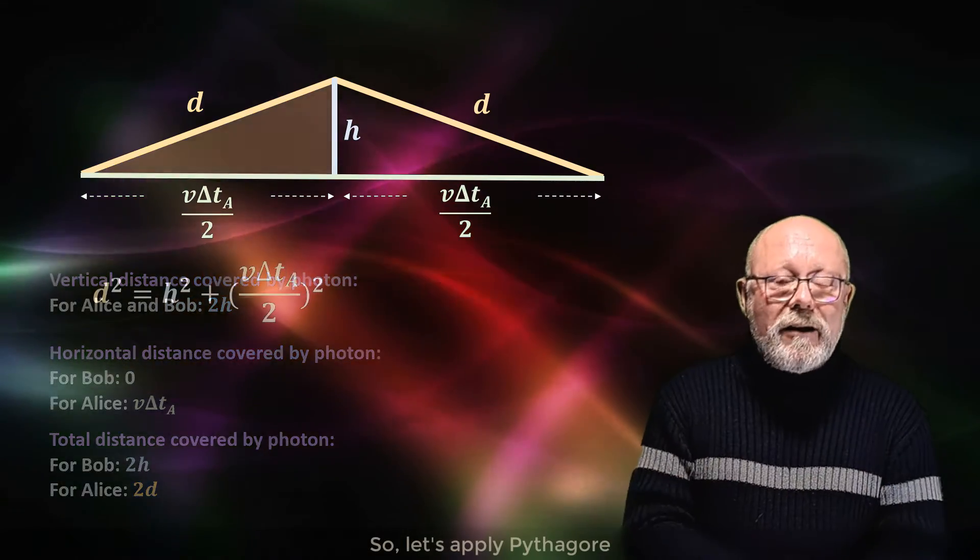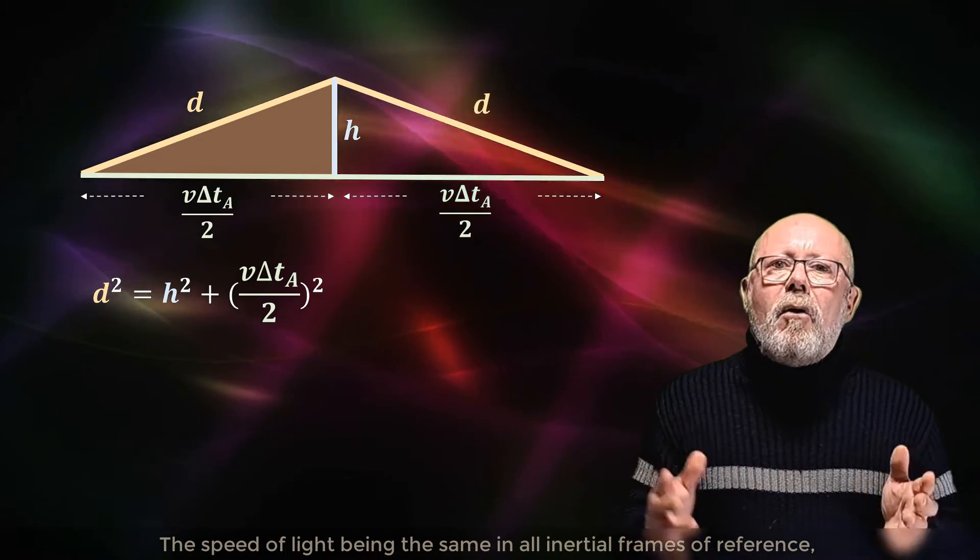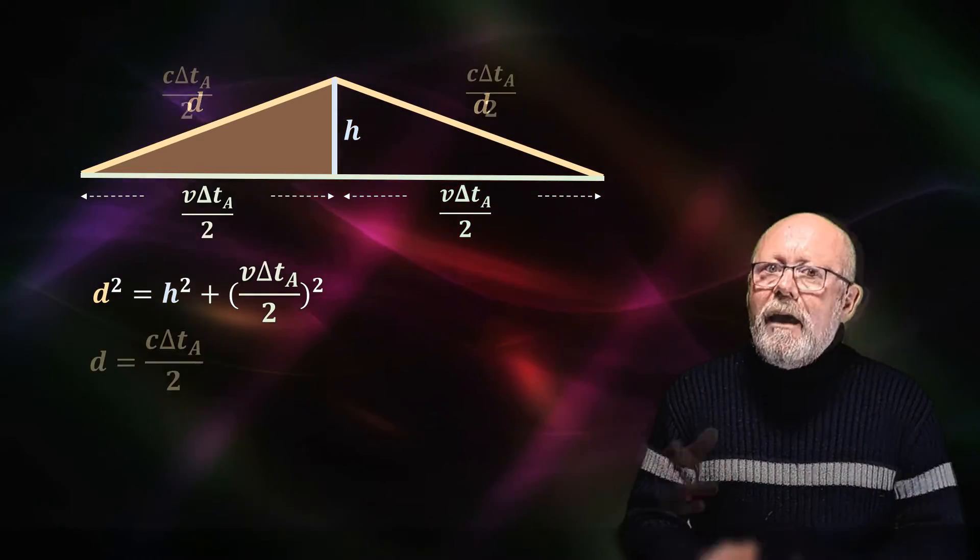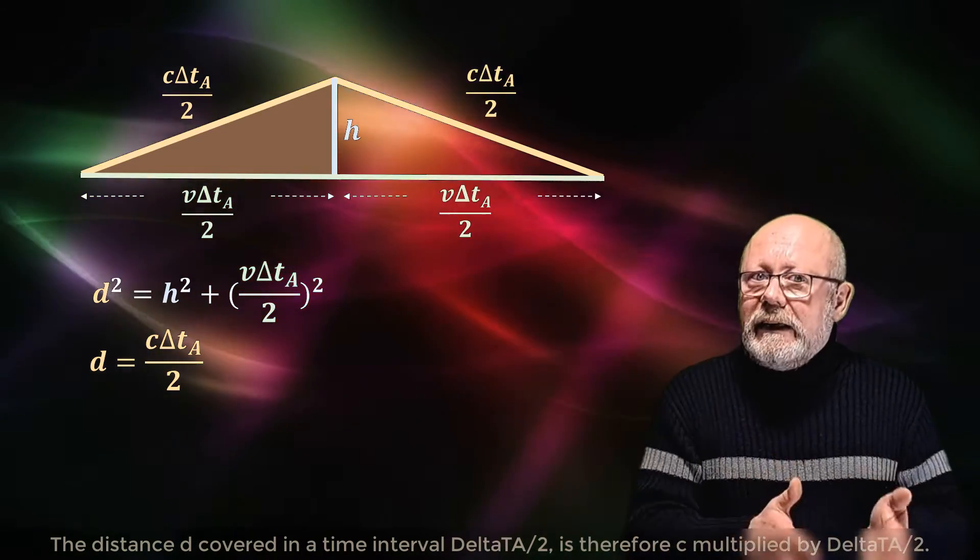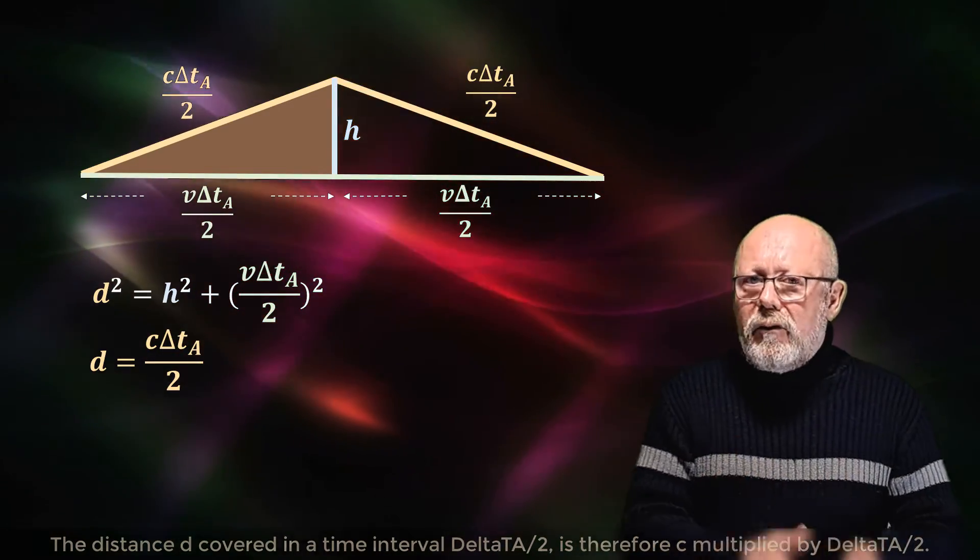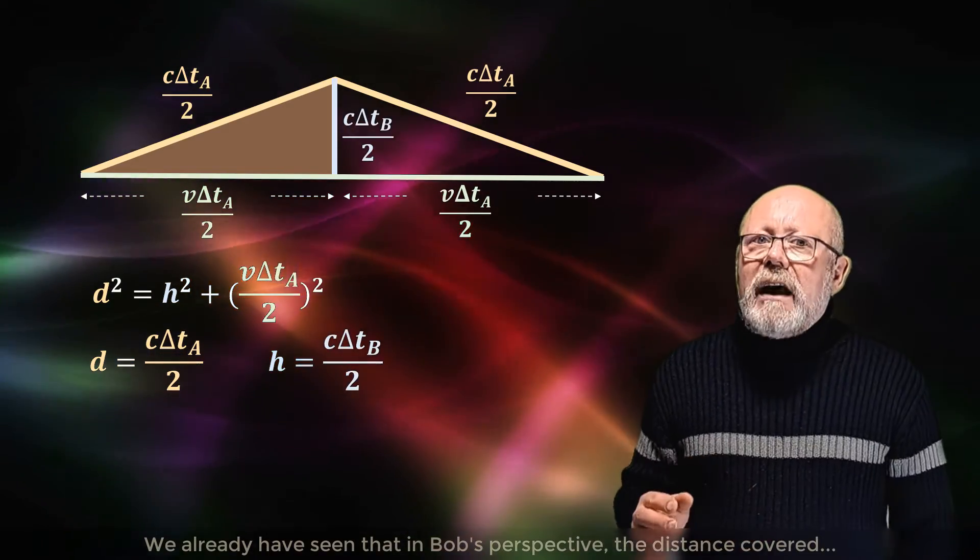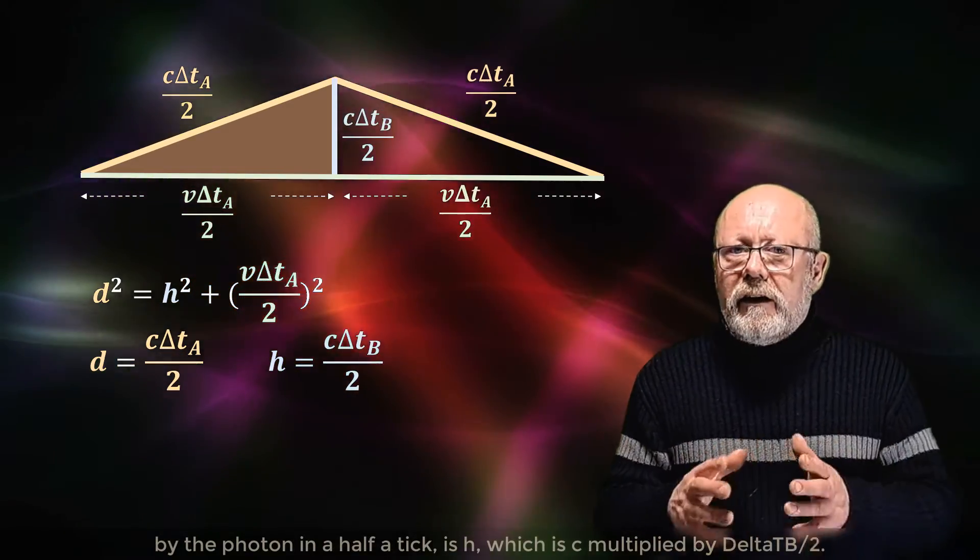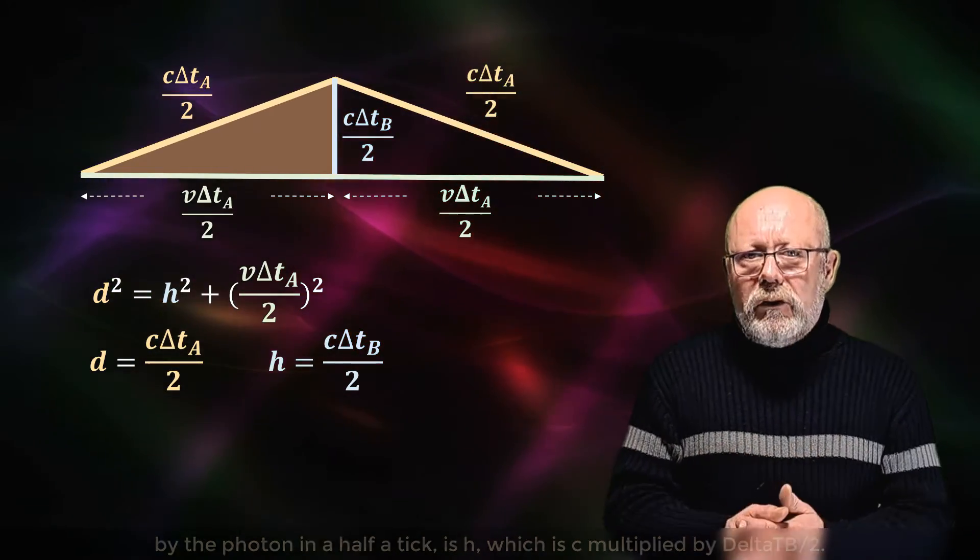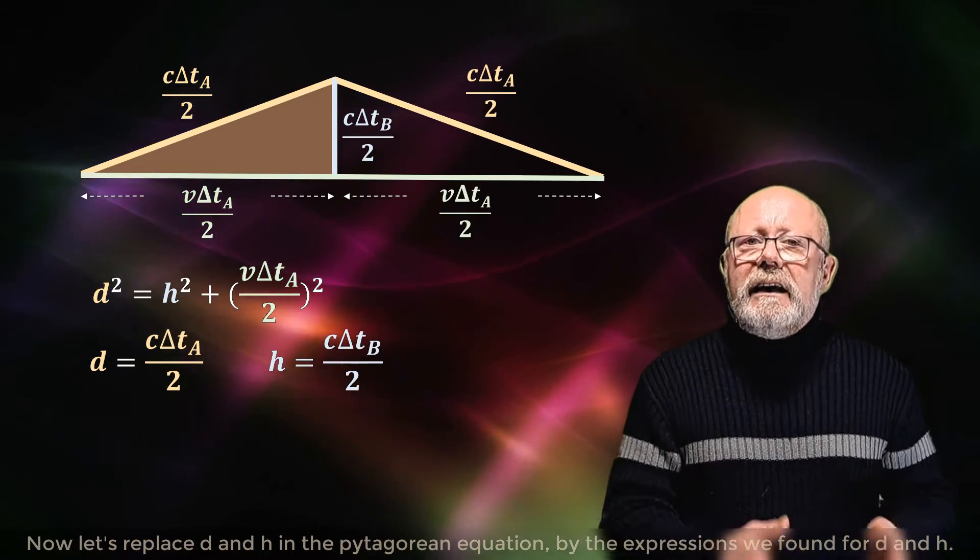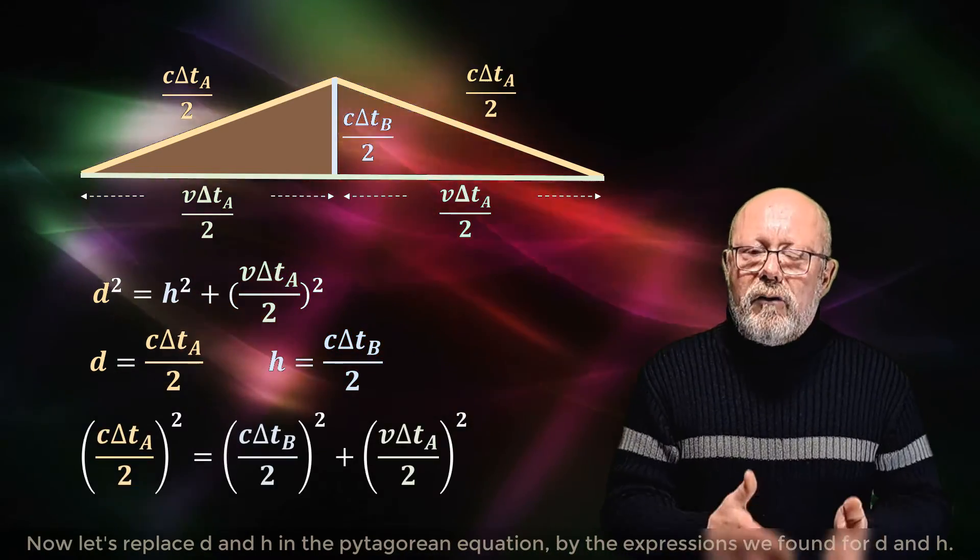is twice the hypotenuse of the right-angled triangle of height h and base V delta t_A over 2. So let's apply Pythagoras. The speed of light being the same in all inertial frames of reference, the distance d covered in a time interval delta t_A over 2 will therefore be c multiplied by delta t_A over 2. We already have seen that in Bob's perspective, the distance covered by the photon in a half of a tick is h, which is c multiplied by delta t_B over 2.